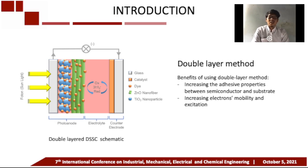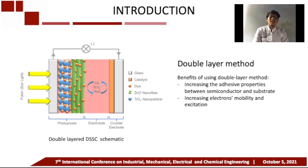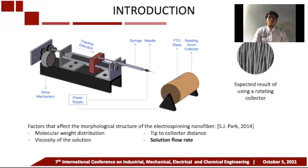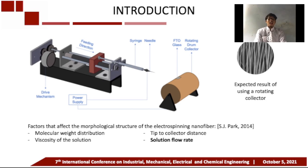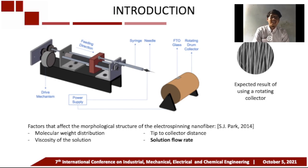The addition of zinc oxide nanofiber semiconductors to titanium dioxide nanoparticles makes it easier for electrons to flow after photons are absorbed, because of their morphology which leads to increasing electron mobility and excitation. The development of the zinc oxide nanofiber fabrication method on double-layer DSSCs is performed by directly depositing the zinc oxide solution on the titanium dioxide deposited FTO glass using the electrospinning process. This method can reduce fabrication time, prevent damage to nanoparticle and nanofiber structures, and can improve DSSC performance.